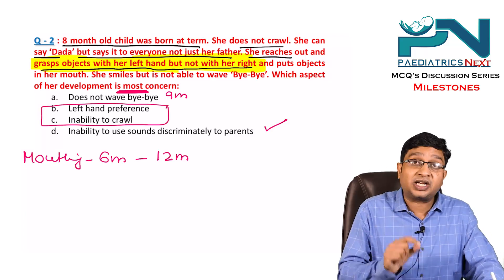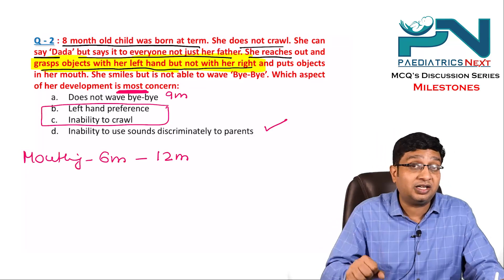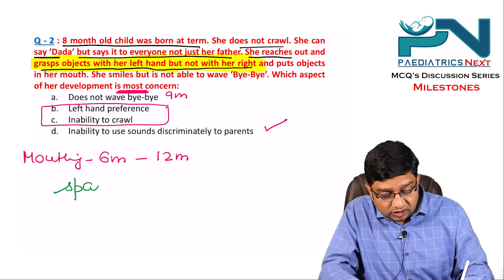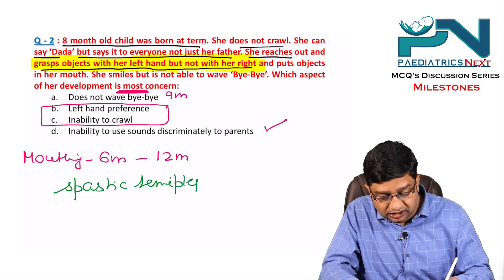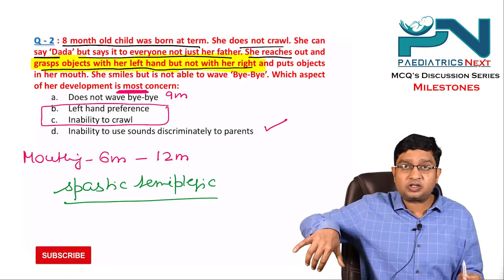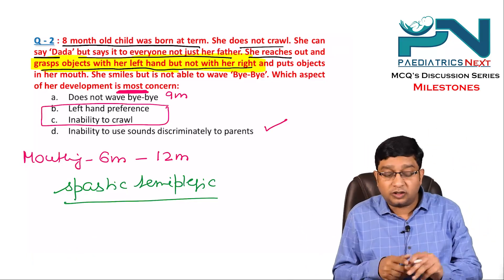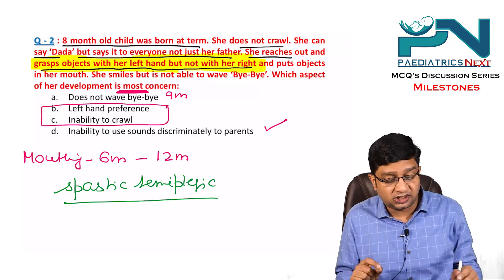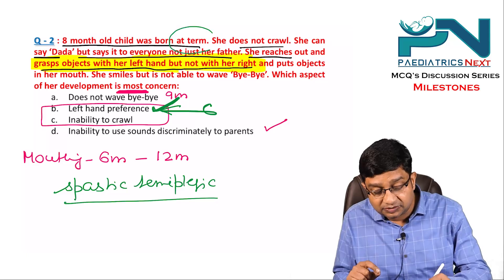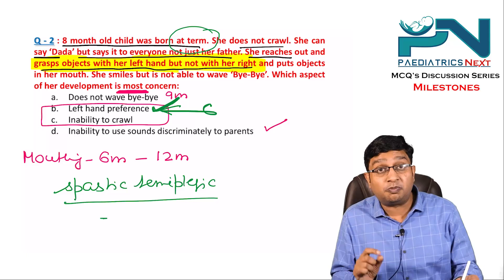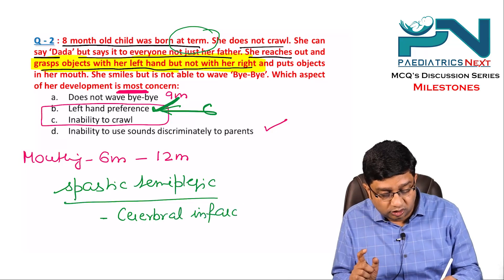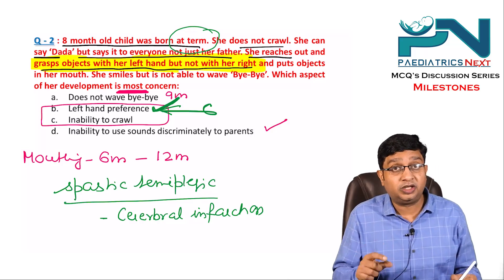The child using only the left hand may indicate spastic hemiplegic type of cerebral palsy, where one side is not working, so the child grasps with only one hand. Both findings are concerning, but the most important concern is the left-hand preference. Since this is a term child, the most important cause of spastic hemiplegia is cerebral infarction, and you should always rule out hypercoagulability of blood. The best answer is left-hand preference.